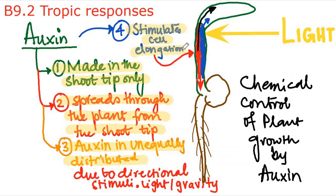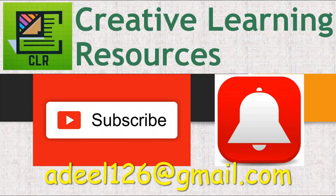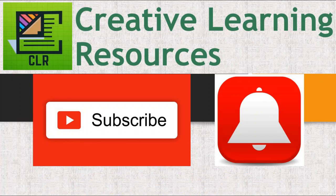I hope you have understood the concept of tropic responses and chemical control. Don't forget to watch video CSB9.1 on Hormones in Humans to understand the whole topic B9 Coordination and Responses — these two videos cover the whole topic. Keep practicing through past papers; if you need classified past papers, send an email or leave a request in the comments. Please subscribe to the channel, press the bell icon for the latest updates, and drop any questions in the comment section below. Thanks for watching!